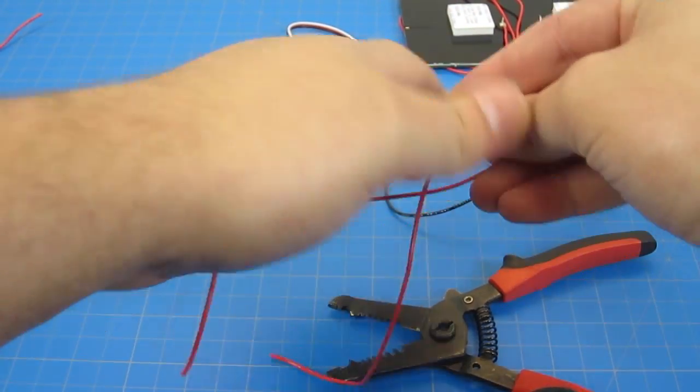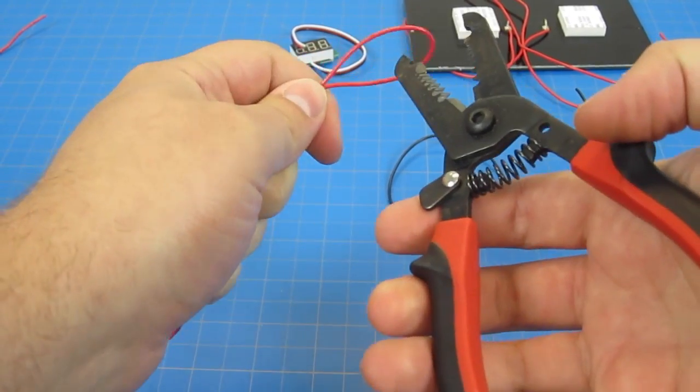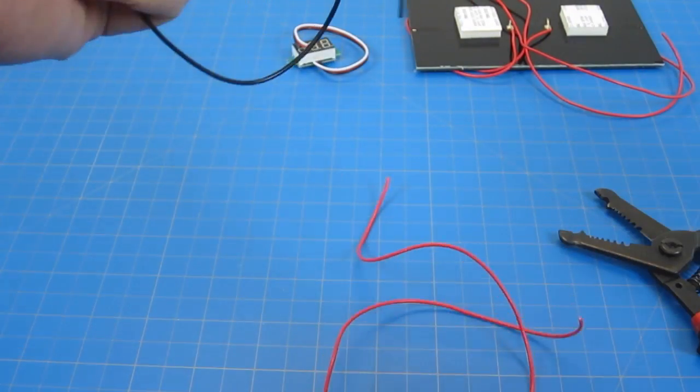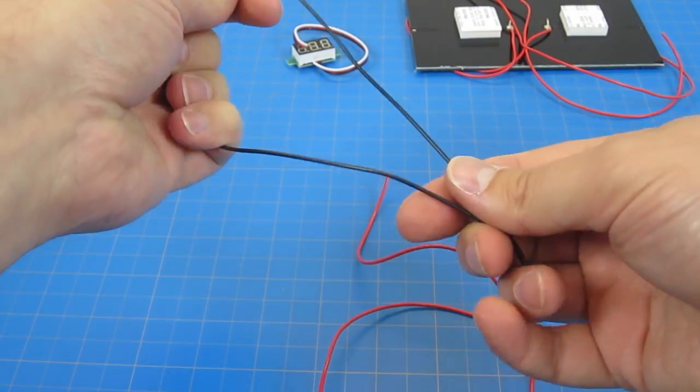First we'll start by cutting the two long wires in half, both the red and the black wire. Do not touch the smaller wire. We're going to use that later, though if you want you can also cut that in half now.